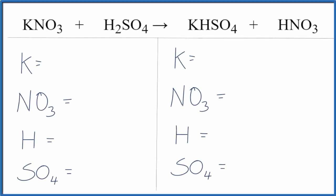In this equation, we have KNO3 plus H2SO4. That's potassium nitrate plus sulfuric acid.